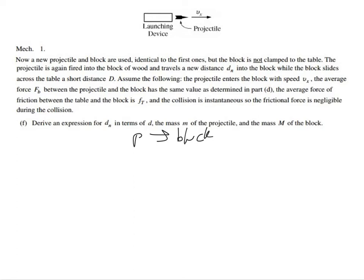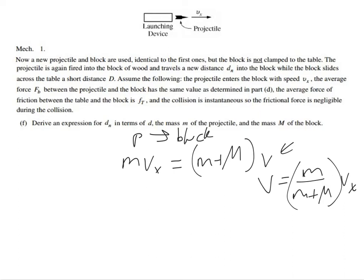All right, so this was the initial velocity v_x and that's the final velocity. So we end up getting that the final velocity v is just equal to m over (m + M) times v_x.